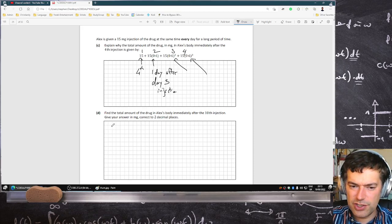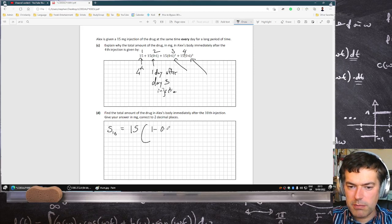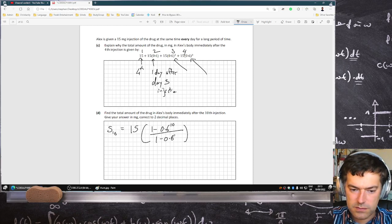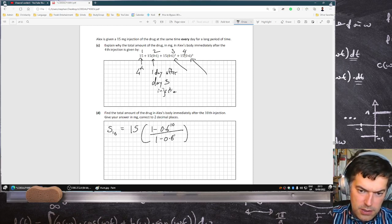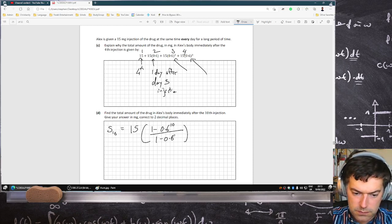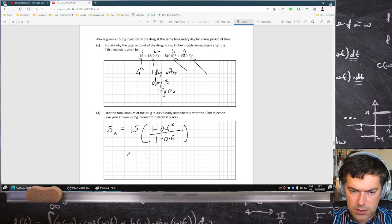So immediately after the tenth injection would be S10, which is A times 1 minus R power N over 1 minus R. Two decimal places, 37.27 milligrams.